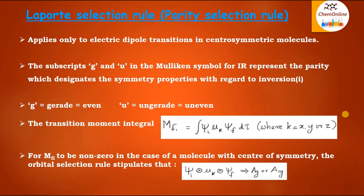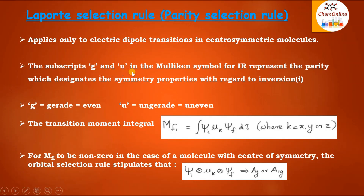The final selection rule is the Laporte selection rule, or parity selection rule. This is the rule which applies only to electric dipole transitions in centrosymmetric molecules. Centrosymmetric means groups which contain an inversion center I. In groups containing I, the Mulliken symbol for each irreducible representation contains either G or U as a subscript.